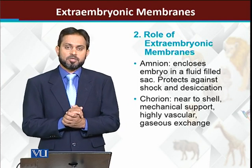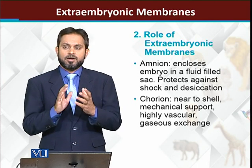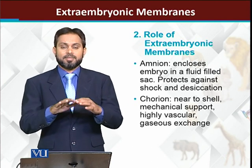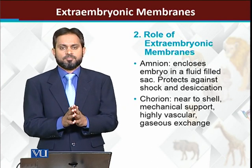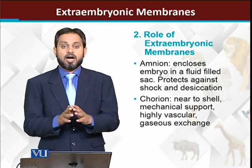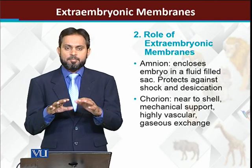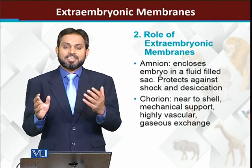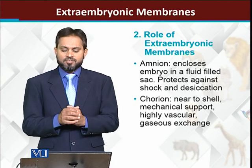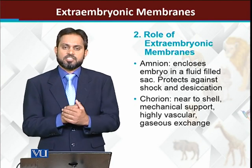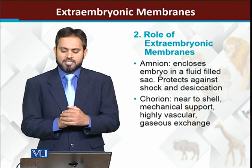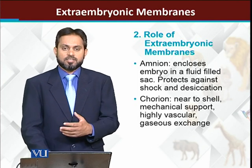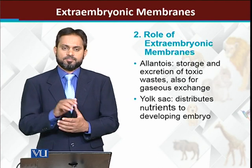The second extra embryonic membrane is the chorion. Chorion is the second extra embryonic membrane and its basic function is that it protects from mechanical shock. It is outer to the amnion - it is located outside the amnion - and generally it will protect from mechanical stress. In addition, it is also used for gaseous exchange and plays an important role in that. It is highly vascular - it has high vascularization.